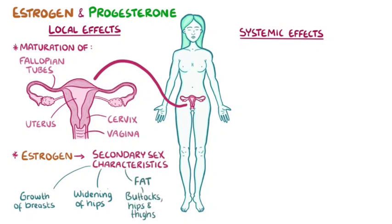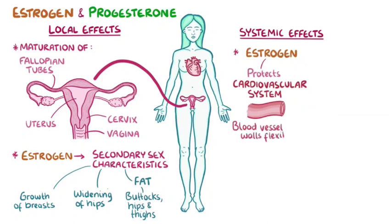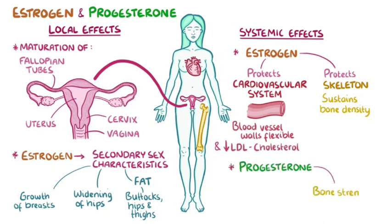On a systemic level, estrogen has a protective effect on the cardiovascular system, helping keep the blood vessel walls flexible to accommodate blood flow, as well as on the skeleton, where it helps sustain bone density. Estrogen also protects against cardiovascular disease by lowering levels of LDL cholesterol. Progesterone, for its part, also plays a role in bone strength, as well as in keeping the skin elastic.